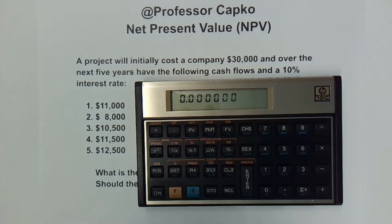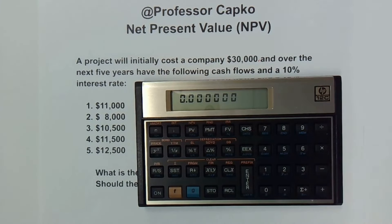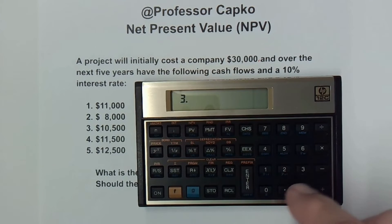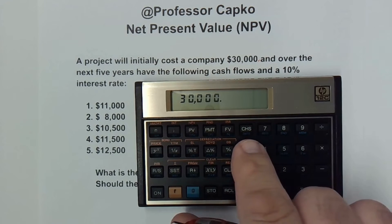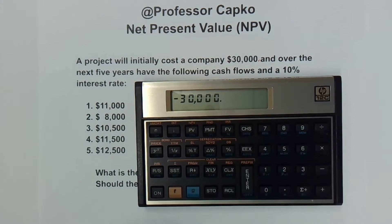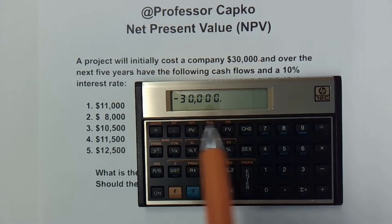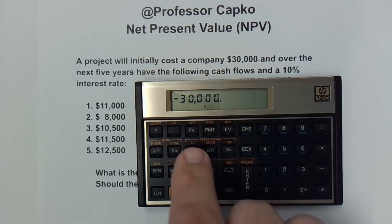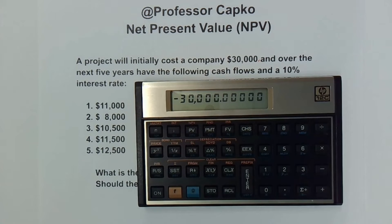The first thing we need to do is enter this outlay. This $30,000 is going to be paid out for the investment into this project. So I type in 30,000. We need to change the sign because this is money going out of the company, not money coming in. So CHS — that's change sign — makes it negative $30,000. This is our initial outlay, so it's the first cash flow. I hit G and right below the PV button I hit CF sub-zero, and that takes it in as the initial cash flow.